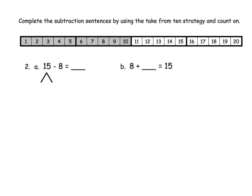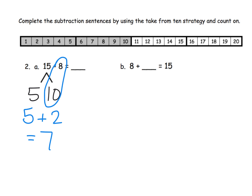Another example of the same kind of problem — we're going to take 15 and decompose it. Parents and teachers, remember: if students want to decompose this as 10 and 5, that is certainly allowed. It's called the commutative property. We are going to subtract from 10, so 10 minus 8 is 2. Then plus the original 5, so 5 plus 2 is 7. That means 15 minus 8 is 7.